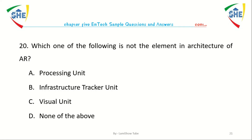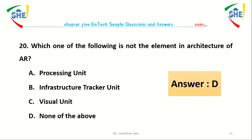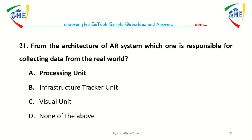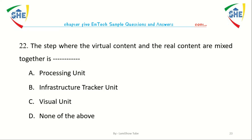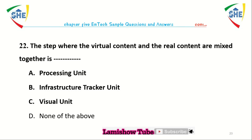Question number 20: Which one of the following is not an element in the architecture of an augmented reality system? Question number 21: Which unit is responsible for collecting data from the environment? A) Processing unit, B) Infrastructure/tracker unit, C) Visual unit, D) None of the above. Question number 22: Where the virtual content and the real content are mixed together is called the A) Processing unit, B) Infrastructure/tracker unit, C) Visual unit, D) None of the above.